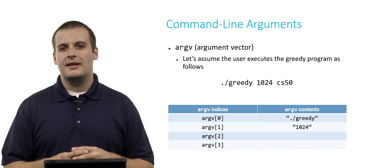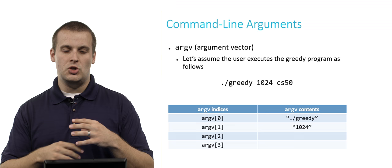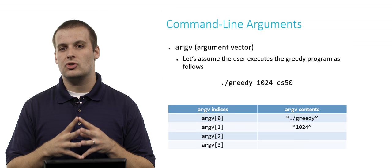It stores strings, right? But it looks like 1024 is an integer value. This is a really important distinction and is actually going to become something that you might encounter in later problems. Everything in argv is stored as a string.